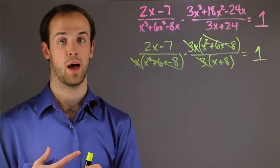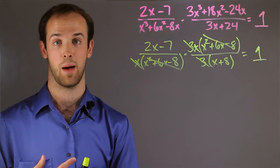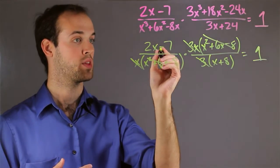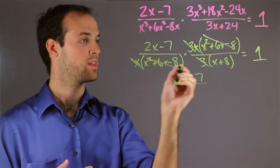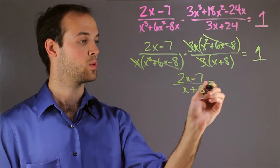So now I'm just going to multiply my simplified expression straight across, numerator to numerator and denominator to denominator. So on the top, all I'm left with is this 2x minus 7, and on the bottom all I'm left with is x plus 8. And it's still equal to 1.